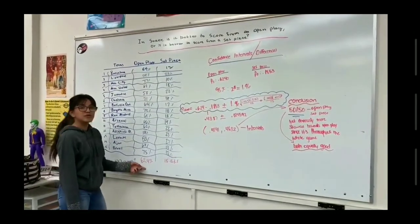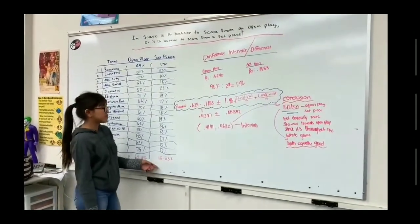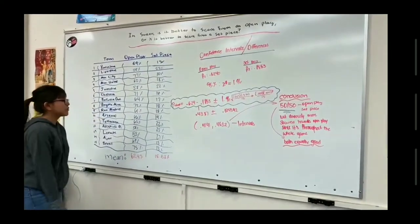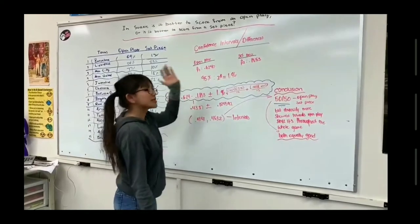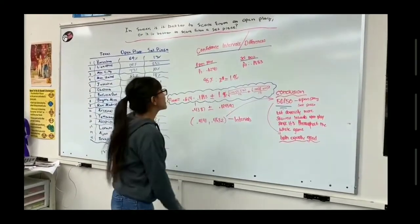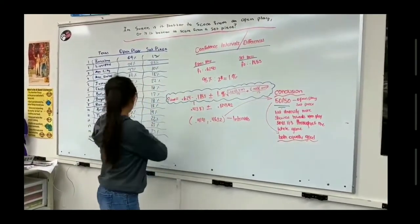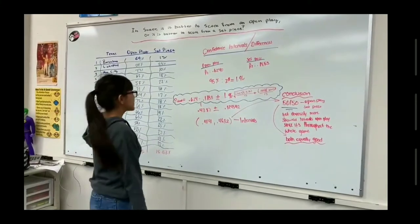So since the means are 62.4% and 18.53%, we're going to use those for the math. We're going to be doing confidence intervals and the differences between the means.